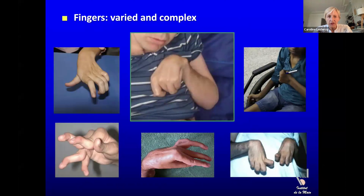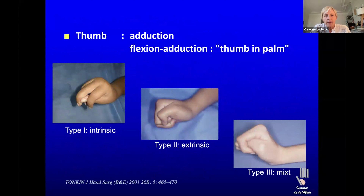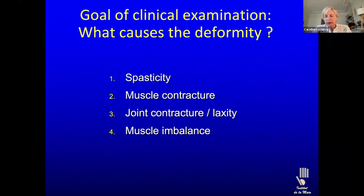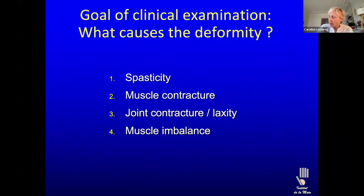Another important thing is to record our examination. We have standardized charts, and as much as possible we fill them preoperatively, after toxin, and after surgery many times. The second important part is video recording. We do a lot of videos of the patients. My occupational therapist designed a very useful tool — putting the camera under a transparent table so you see the thumb much better, since the hand is very often in pronation and examining the thumb is difficult.